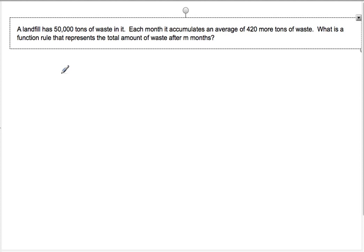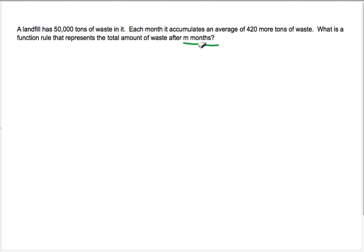Let's try another one. A landfill has 50,000 tons of waste in it. Each month, it accumulates an average of 420 more tons of waste. What is the function rule that represents the total amount of waste after M months? Okay, so it already has identified one variable for us. M is the amount of months. What is the function rule that represents the total amount of waste? So let's identify one more variable here. We'll say W equals total waste.